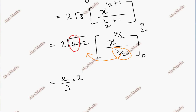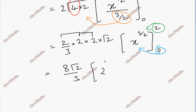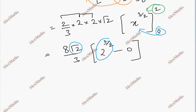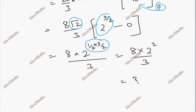Substituting the upper limit x = 2 and lower limit x = 0: we get 2 · (2/3) · √8 · 2^(3/2). Simplifying: 8 · (2/3) · 2^(3/2). Since 2^(3/2) = 2√2, this gives (8 · 4)/3 = 32/3. The required area is 32/3 square units.